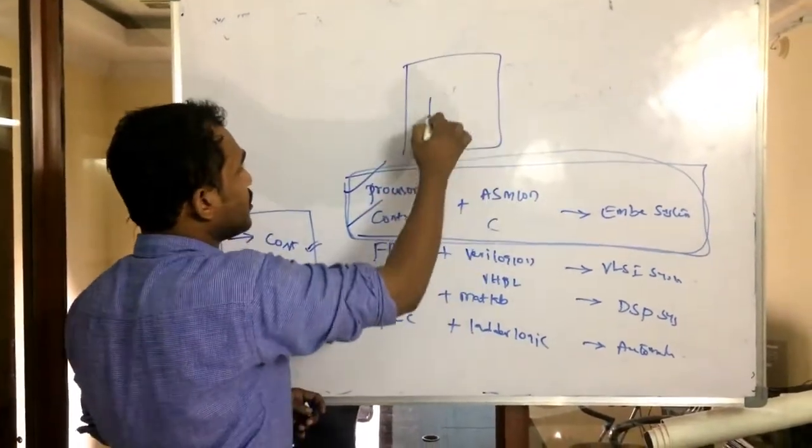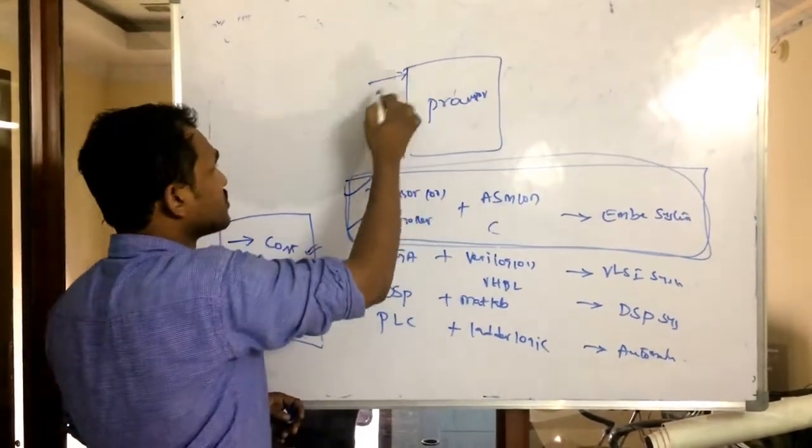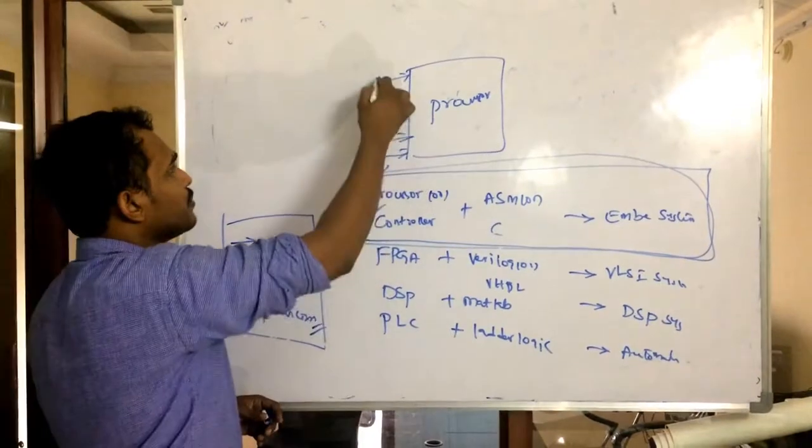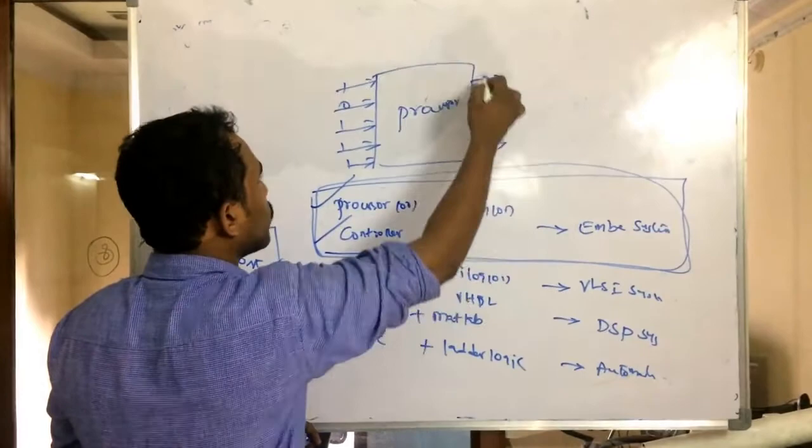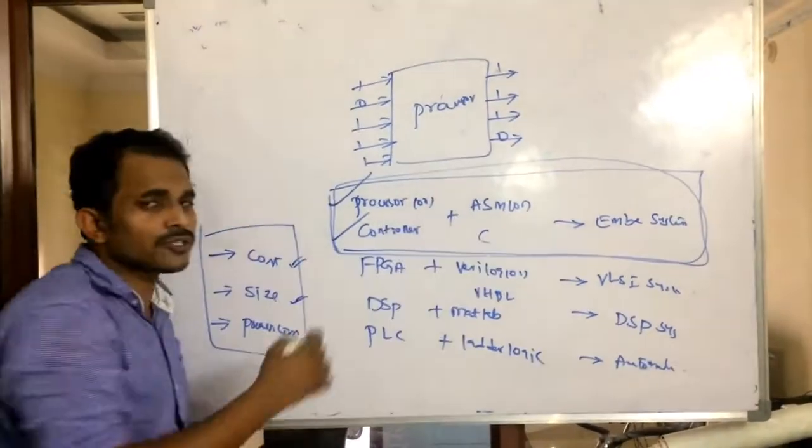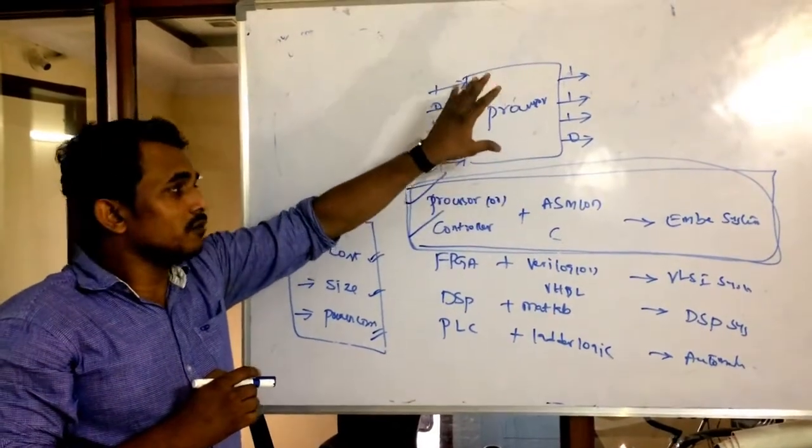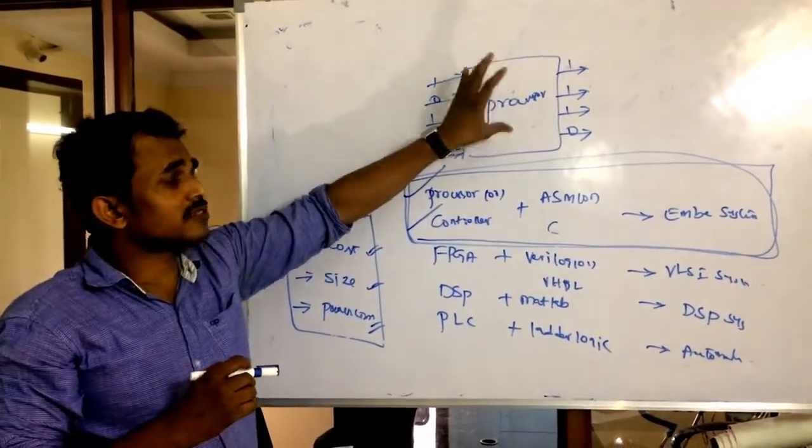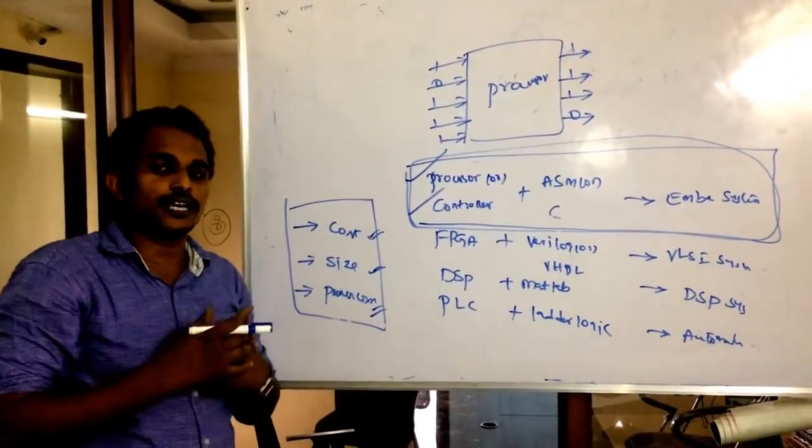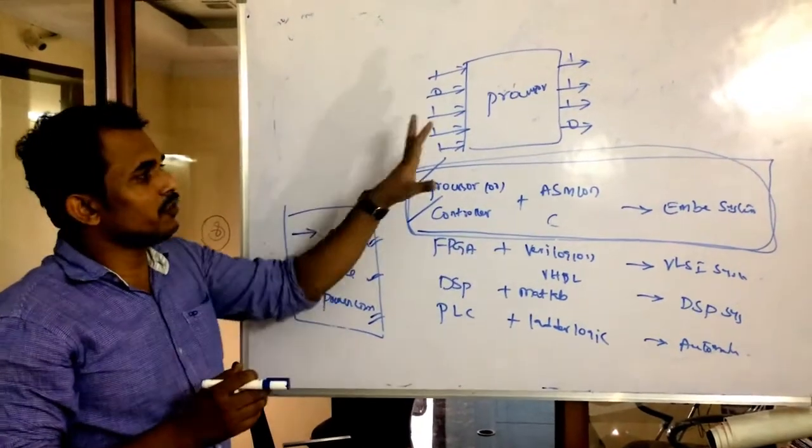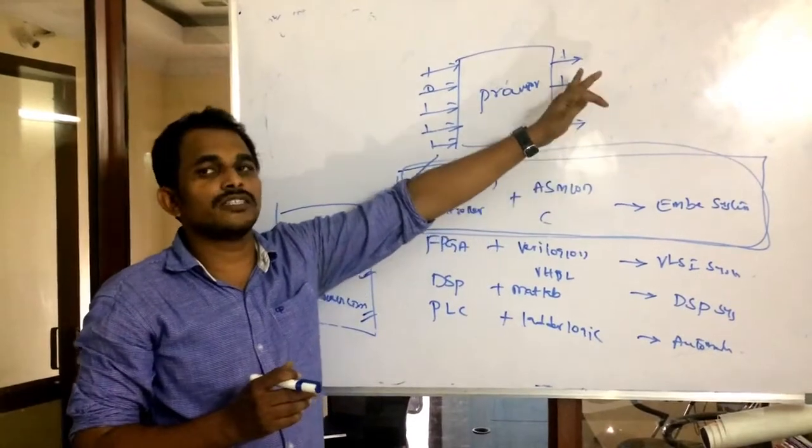Coming to the general processor, what is the general behavior of processor in the application? It always requires the binary information as input and provides binary output. What is the use of giving binary input and taking binary output from the processor?